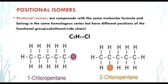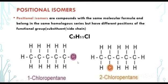Let's look at an example between 1-chloropentane and 2-chloropentane. With positional isomers, again, we first confirm the molecular formula is the same. We have 5 carbon atoms, 5 carbon atoms, 11 hydrogen atoms, 11 hydrogen atoms, and 1 chloro atom each. What is different is the position of the functional group — the chlorine is attached to the first carbon here, but to the second carbon here. Hence, we have positional isomers.